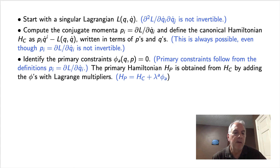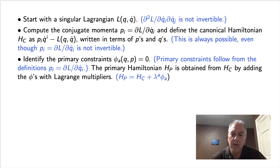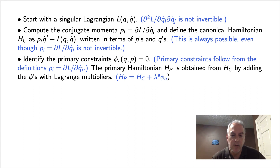Next, we identify the primary constraints, which I denote by phi sub a, where a is an index ranging over the number of primary constraints. These are constraints on the p's and q's that follow from the definitions of the momenta. The primary Hamiltonian h sub p is then obtained from the canonical Hamiltonian by adding the phi's with Lagrange multipliers.